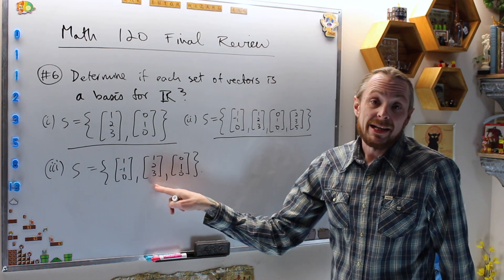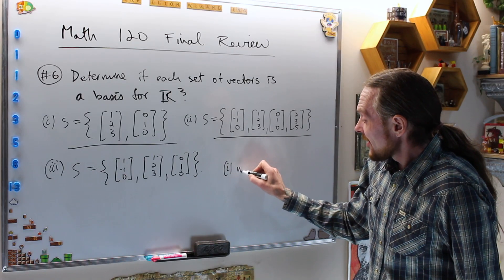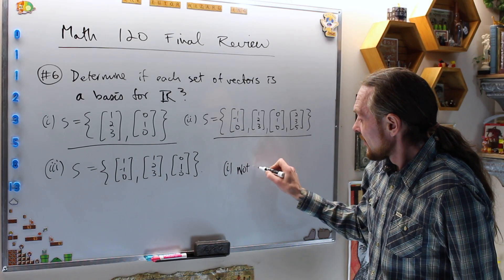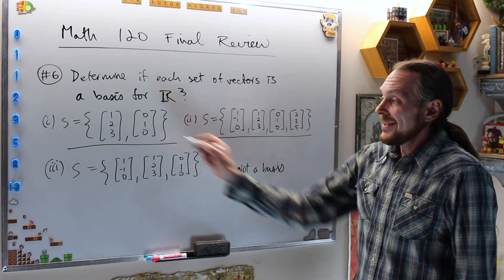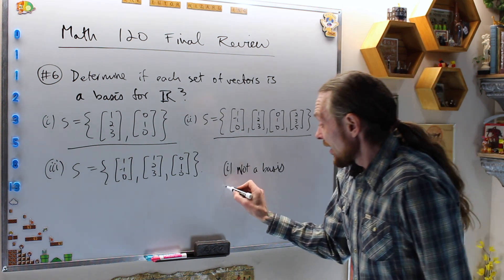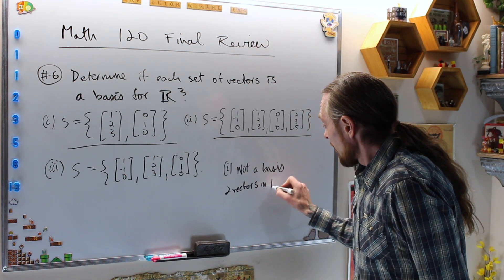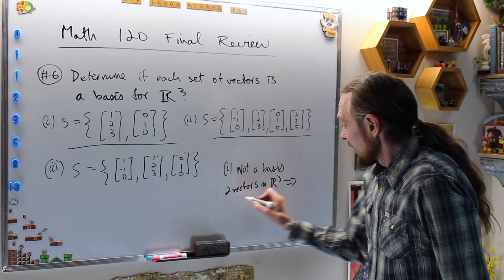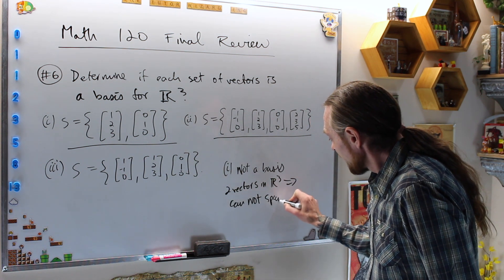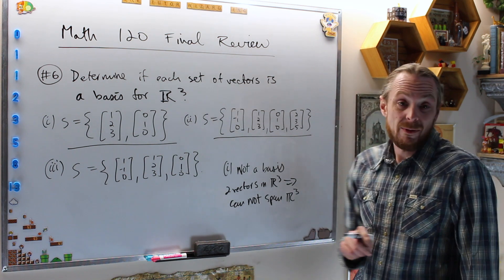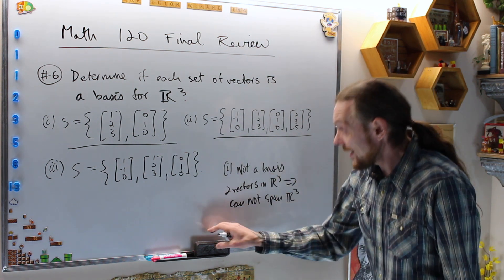For the first case, all we have to say is: not a basis. Why? The justification is there are only two vectors in R³, so they cannot span R³ and therefore are not a basis.